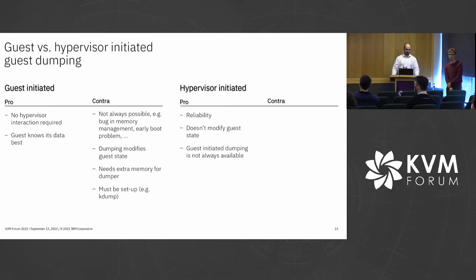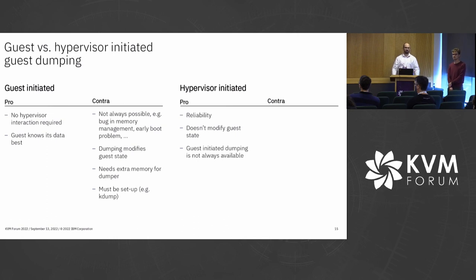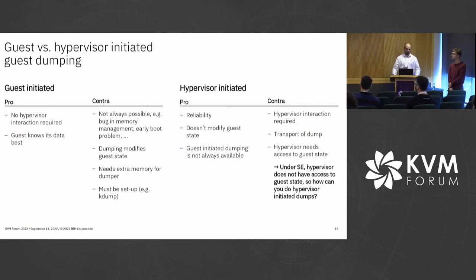Pros for the hypervisor-initiated dump: it's reliable, it doesn't modify the guest state, and guest-initiated dumping is not always available — for example, for small guests you cannot have the overhead of memory required for kdump. But the downside is that hypervisor interaction is required and we have to transport the dump. Also, the hypervisor needs access to the whole guest state, and in case of secure execution, the hypervisor does not have access to the whole guest state. So how can you do hypervisor-initiated dump for secure execution guests?